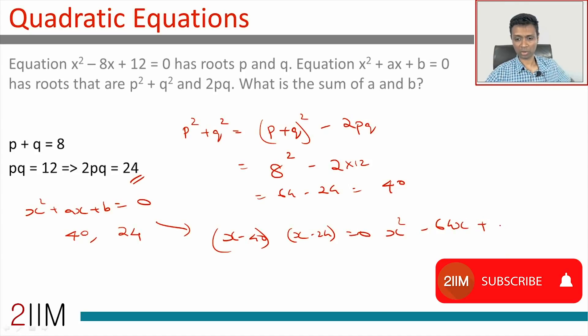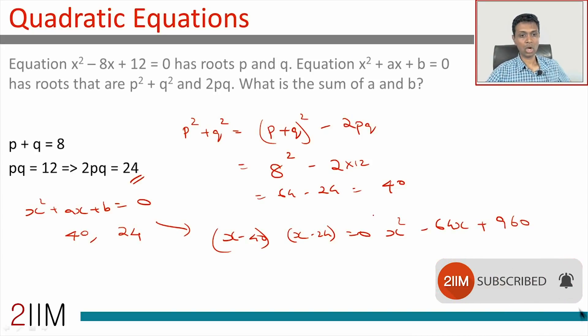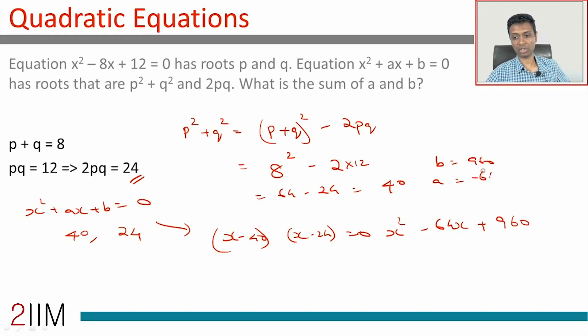960. So b is 960, a is -64, and a + b is 896, which is what you're looking for. So a + b would be 896.